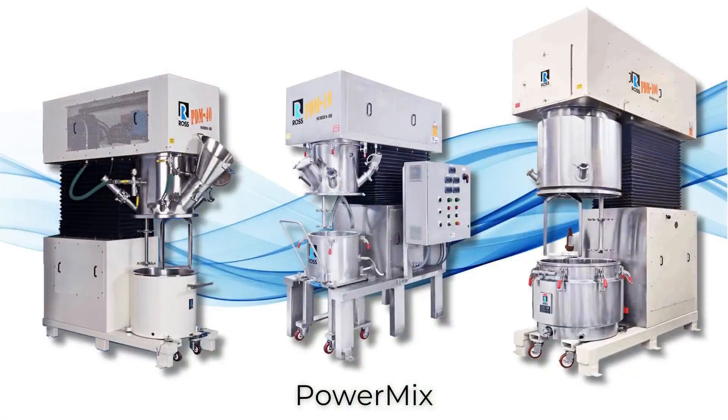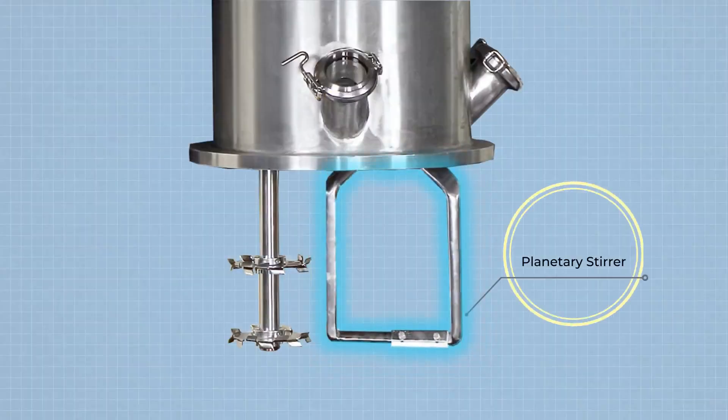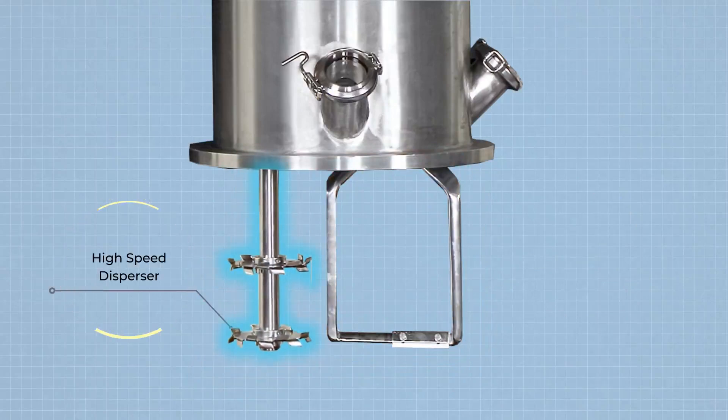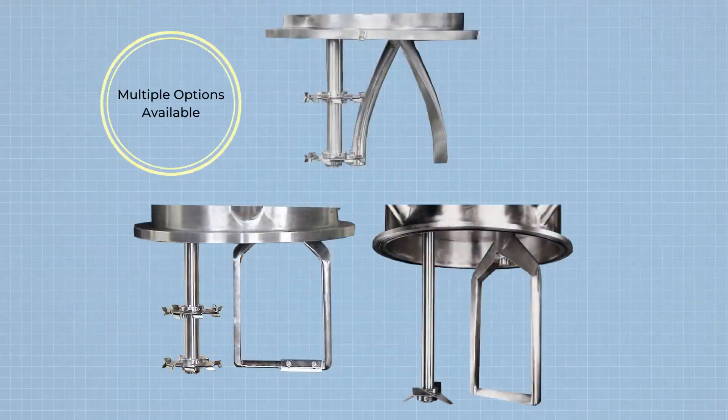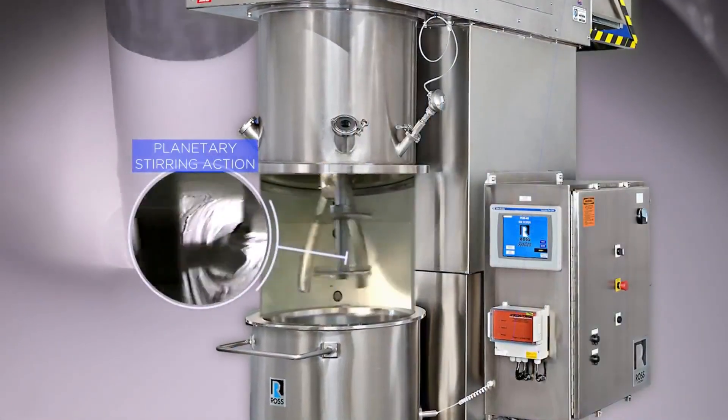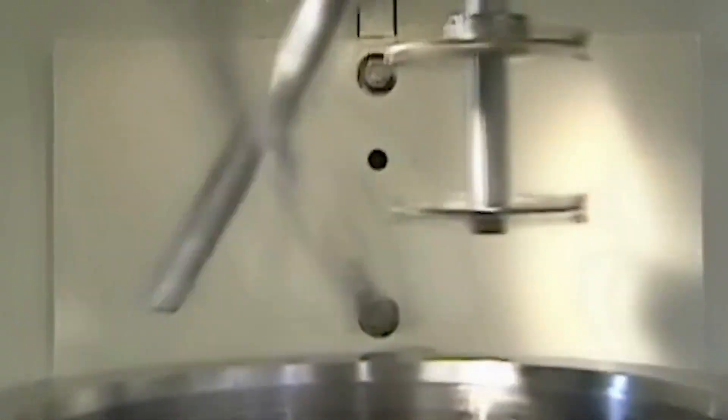The patented Ross PowerMix is a hybrid planetary disperser designed with a planetary stirrer and a high speed disperser blade to impart a combination of high and low speed agitation. The planetary stirrer sweeps material away from the vessel's sidewalls and bottom, carrying it to the sawtooth blade. This accelerates solids wet-out and dispersion while promoting both material and temperature uniformity throughout the batch at all times.